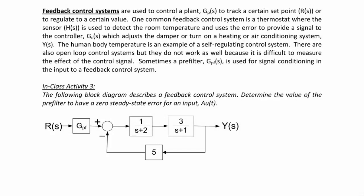Feedback control systems are used to control a plant GP(S) to track to a certain set point R(S), or to regulate to a certain value. One common feedback control system is a thermostat where the sensor H(S) detects the room temperature and uses the error to provide a signal to the controller GC(S), which adjusts the damper or turns on a heating or air conditioning system Y(S). The human body temperature is an example of a self-regulating control system. There are also open loop control systems, but they do not work as well because it's difficult to measure the effect of the control signal without feedback. Sometimes a pre-filter GP(S) is used for signal conditioning the input into a feedback control system to reduce steady state error.